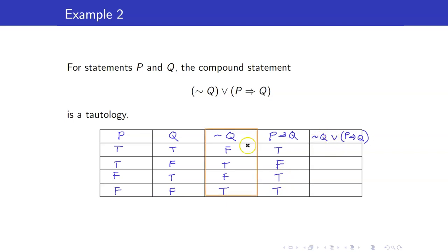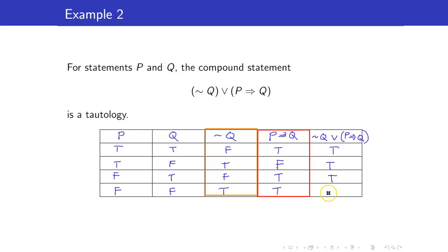We look at the columns for not Q and P implies Q, joined by or. Not Q is true here, and P implies Q is true here, and both of them are true in the remaining rows. So this is a tautology.